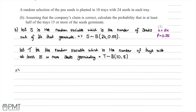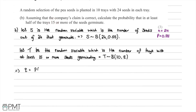We now work out the probability Q. Q is equal to the probability that the number of seeds germinating is greater than or equal to 15, with N equal to 24 and P equal to 0.55. Using a calculator or binomial distribution table, this comes out to be equal to 0.299.